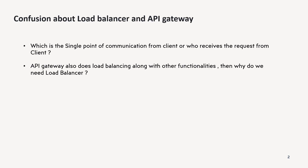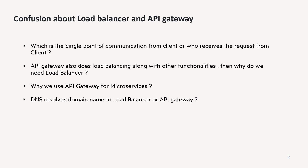A second confusion is which component does the load balancing, because API gateway also has some load balancing capabilities — so why do we need a separate load balancer? A third confusion is: when we talk about microservices, why do we need an API gateway — can't we just use a load balancer alone? And fourth, when DNS resolves a URL that the client hits, which component receives that request? Let us understand the differences and then answer these questions.